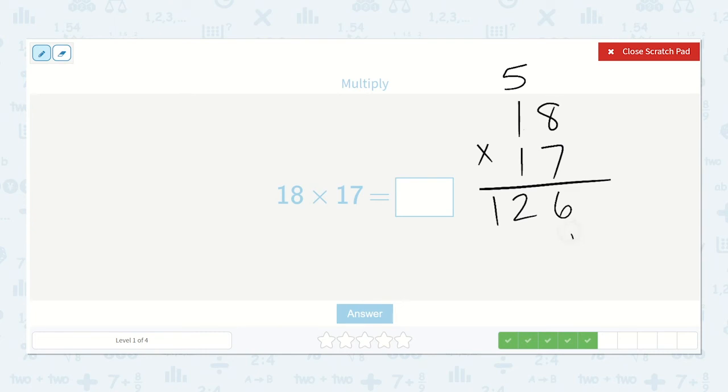Now here, remember, we skipped the ones place. This time I'll put a 0 in the ones place. Because we are not multiplying with ones anymore on this side. We know that we have a 10 that we're multiplying, so it's going to be larger than ones. So 1 times 8 is 8, and 1 times 1 is 1.